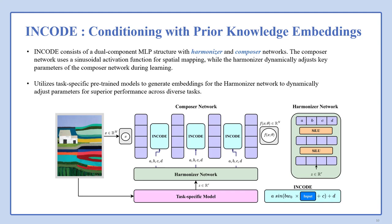The harmonizer network produces four key parameters for the activation function of the composer network. Those values, called A, B, C, D, are generated using deep prior information that we provide using a task-specific pre-trained model. It generates an embedding for the harmonizer network, which maps the embedding to those key parameters.